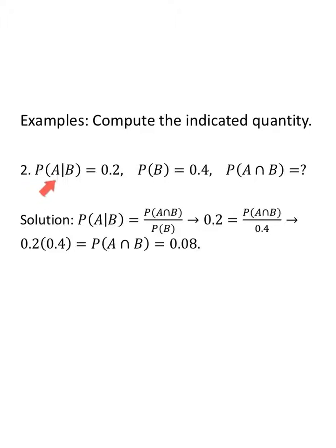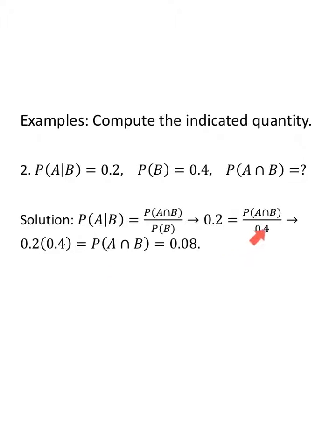If we're given that the probability of A given B is 0.2 and the probability of B is 0.4, we can find the intersection. We set up our equation: probability of A given B equals the probability of the intersection over the probability of B. So 0.2 equals the intersection over 0.4. Multiply both sides by 0.4 — the probability of A intersect B is 0.08.